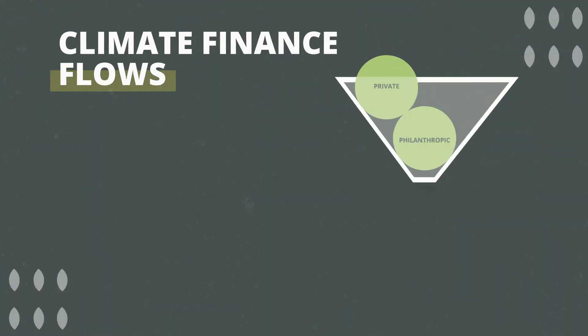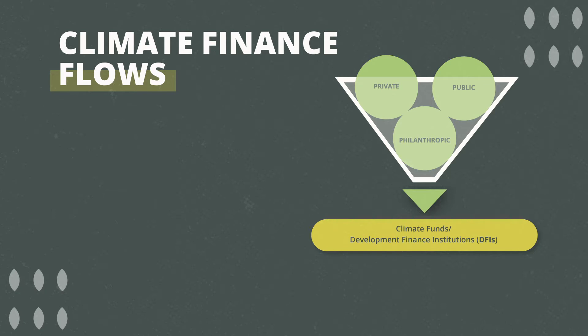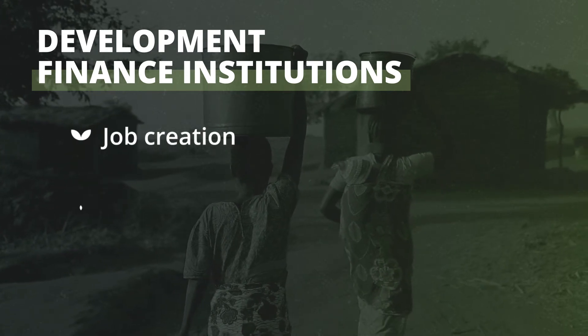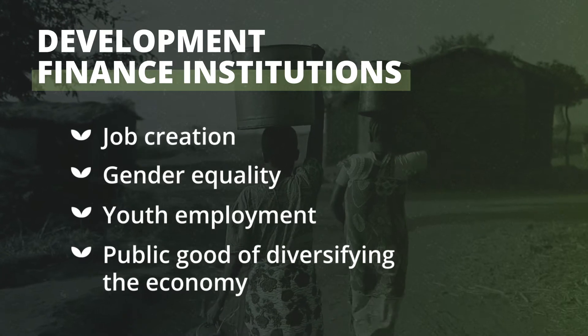Now that we have a good grasp on where climate finance originates, we will next look at climate finance flows. From this diagram, we can see that climate finance typically flows from the international source to development finance institutions, or DFIs, then through to financial intermediaries, and finally to beneficiaries. What sets climate funds and DFIs apart from commercial banks is that DFIs don't only take returns on investment into consideration. They also look at factors like job creation, gender equality, youth employment and the public good of diversifying the economy. DFIs essentially de-risk projects directed towards development goals through the provision of concessional funding offered at below market interest rates or over longer periods.